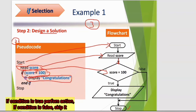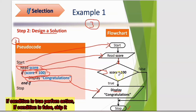The display 'Congratulations' output uses a parallelogram shape. We also have 'end if' — very important, used to indicate the end of the if block. Then we have 'Stop'. Remember: read score, computer checks condition. If condition is true, execute the statement. If false, perform nothing. Don't forget to write 'Stop'.